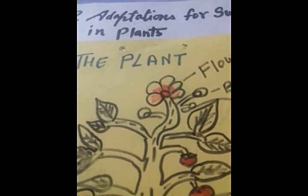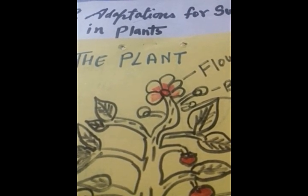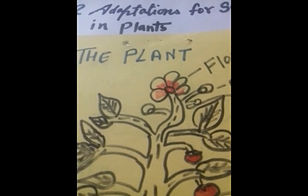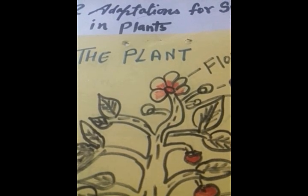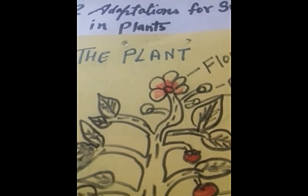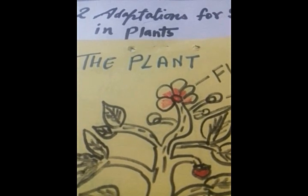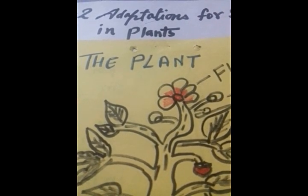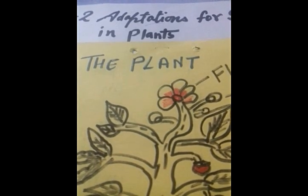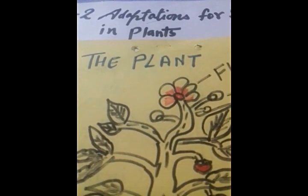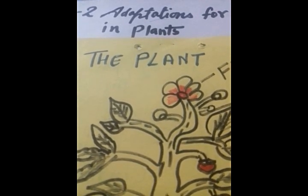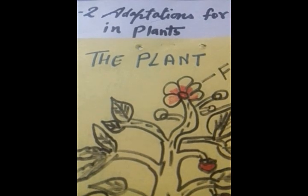Plants have developed different features in order to survive in different places. The special features that allow an organism to live in a particular area are known as adaptation. That is our topic — the first point: adaptation.